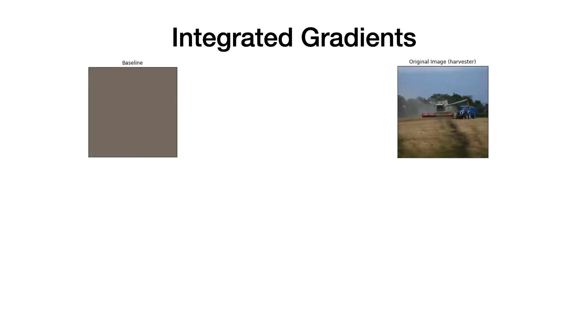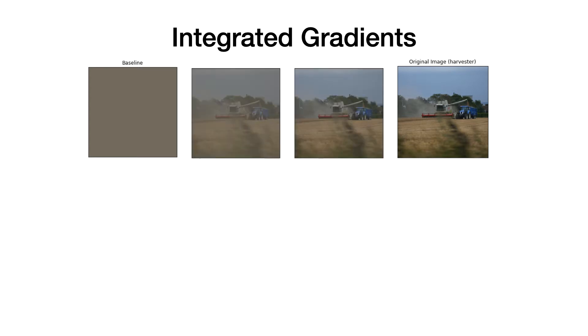The way that integrated gradients assigns these scores is by taking the input image as well as the baseline or reference image. For each point along the path between these two images, the gradients are computed and integrating these results in IG.